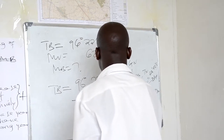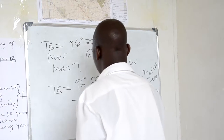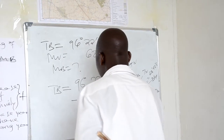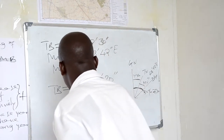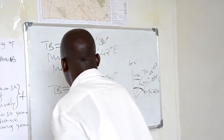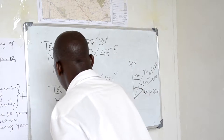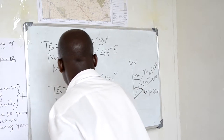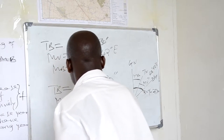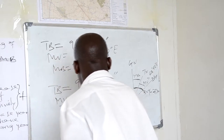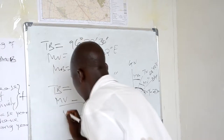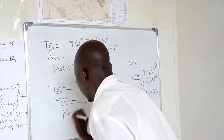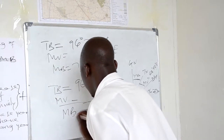Whenever we manage here, we obtain this — this is the magnetic variation. Therefore, wherever we calculate here, we obtain, wherever we manage, we obtain the magnetic bearing, as asked.